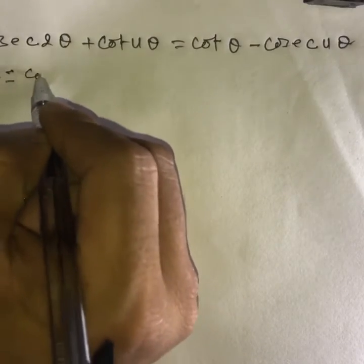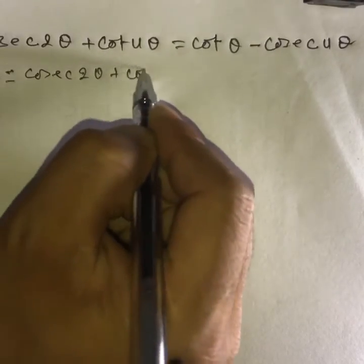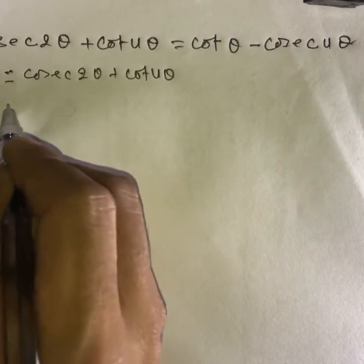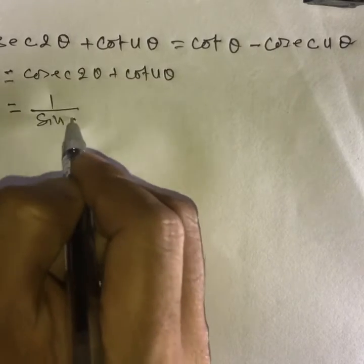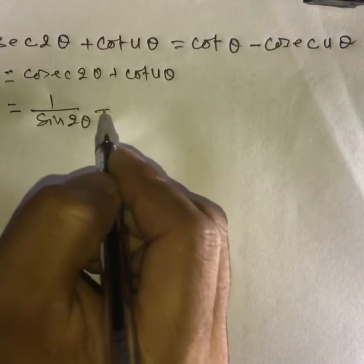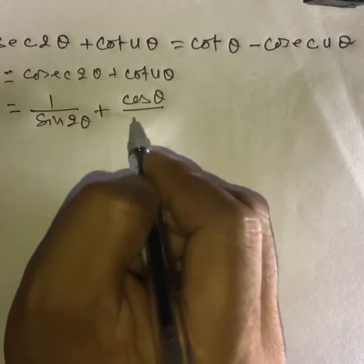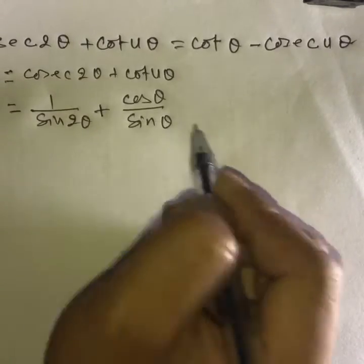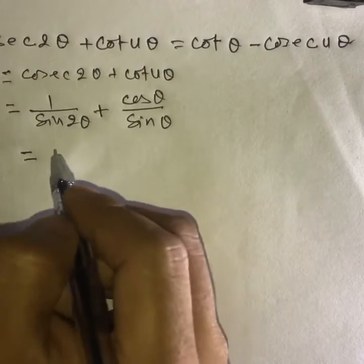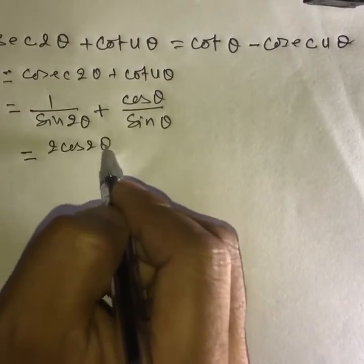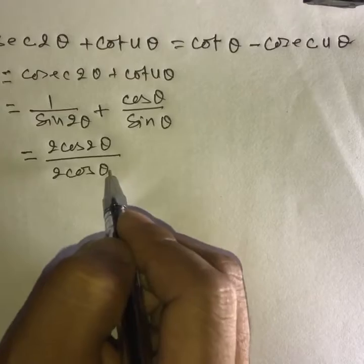LHS equals cos 2 theta plus cos 4 theta. Then cot equals 1 over sin 2 theta plus cos theta over sin theta. Then your term like 2 cos 2 theta — LHS multiply your unit 2 cos...